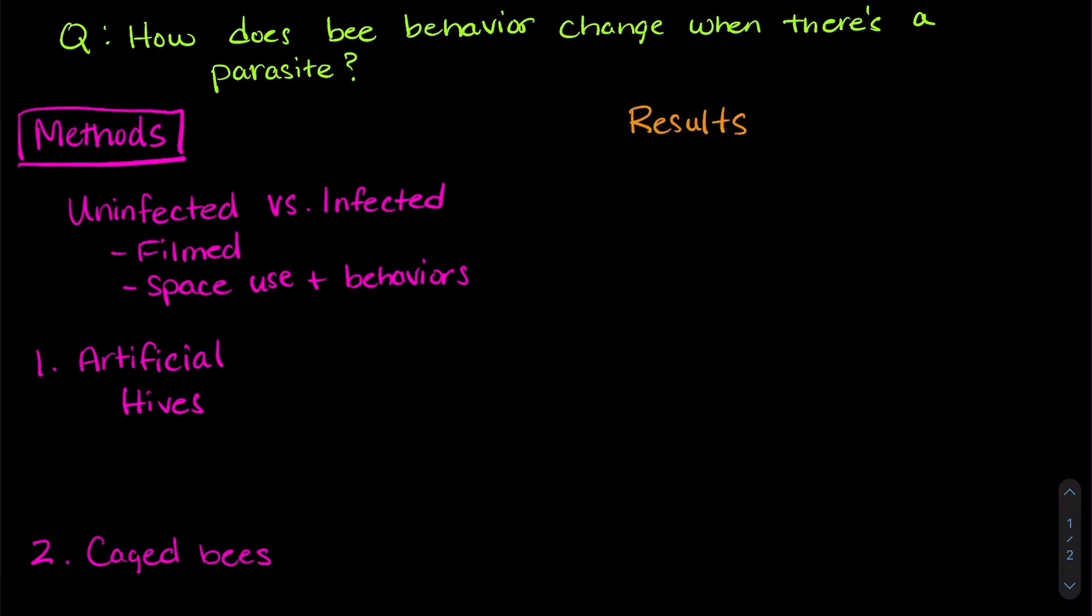Now let's talk about what they found with some results. Overall, the researchers saw that social distancing increased between nurse bees and foragers.